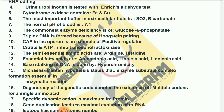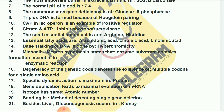Triplex DNA is formed because of Hoogsteen pairing. CAP in lac operon is an example of a positive regulator. Citrate and ATP inhibit phosphofructokinase. The semi-essential amino acids are arginine and histidine. Essential fatty acids are arachidonic acid, linoleic acid, and linolenic acid.